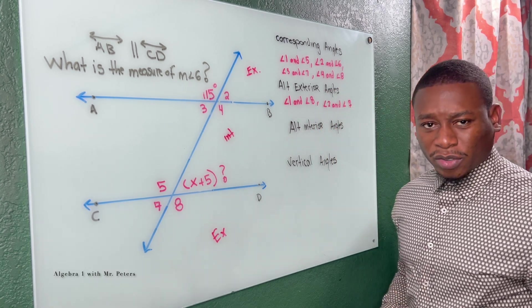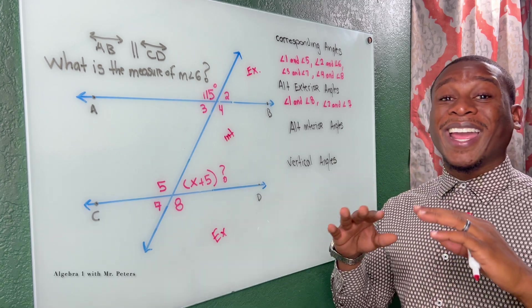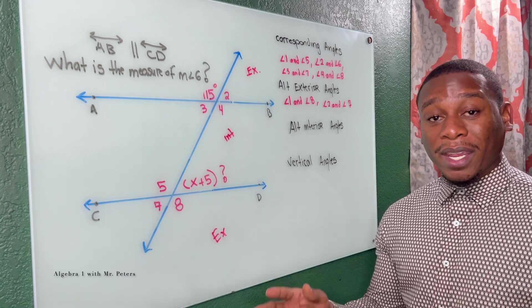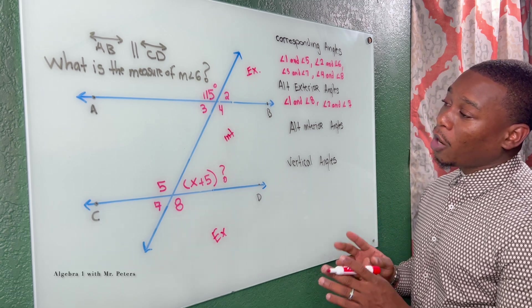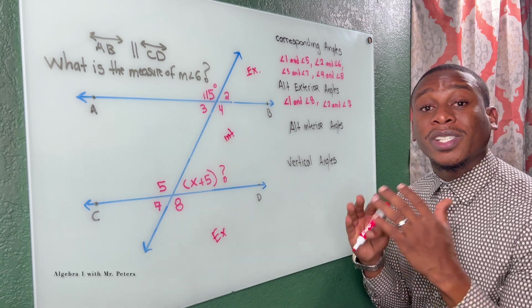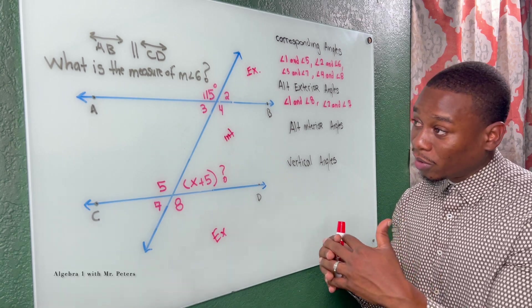And once we understand this relationship family, finding every one of these angle measurements becomes a thousand times easier, I promise you. And then now we're done with that, and then we go with alternate interior angles, which is the same thing but the inside angles.